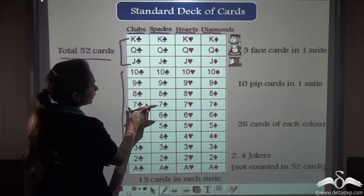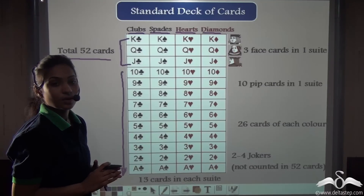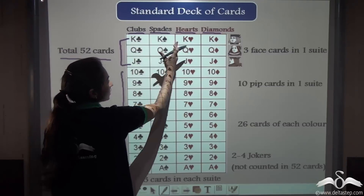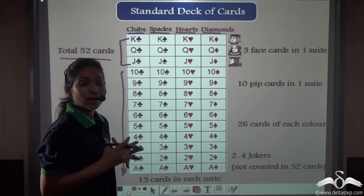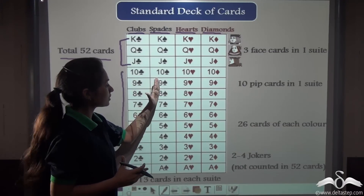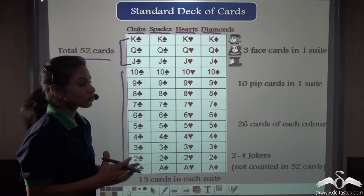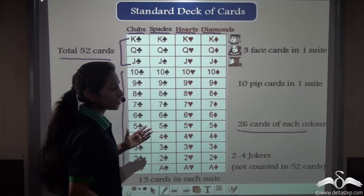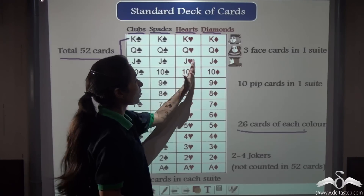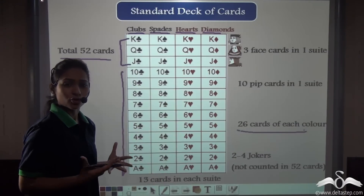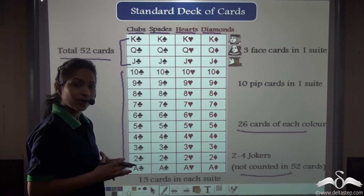There are 13 cards in each suit. Since 2 suits are of the same colour, 13 plus 13 gives 26 black cards and 13 plus 13 gives 26 red cards — so 26 cards of each colour. That is 26 black cards including Clubs and Spades, and 26 red cards including Hearts and Diamonds. Any Jokers in the pack are not counted in the 52 standard cards.